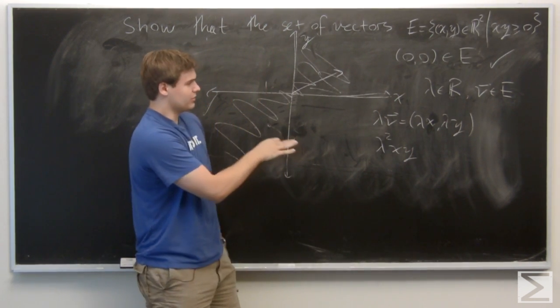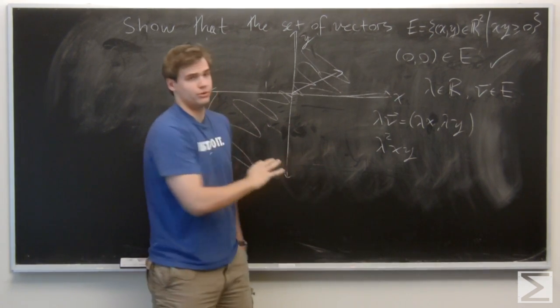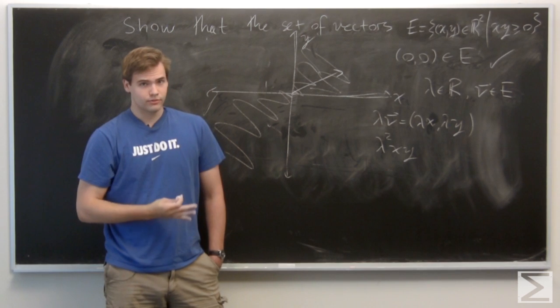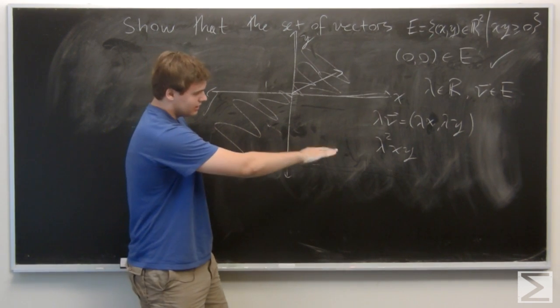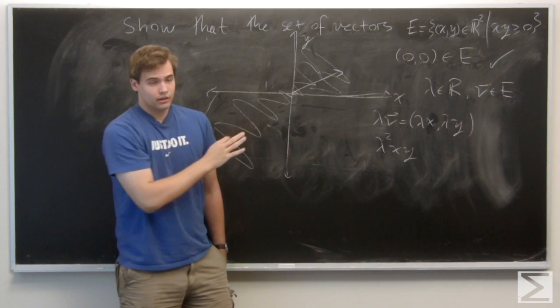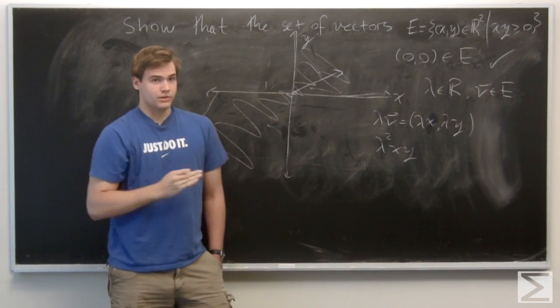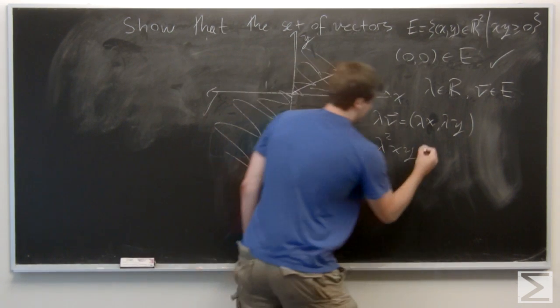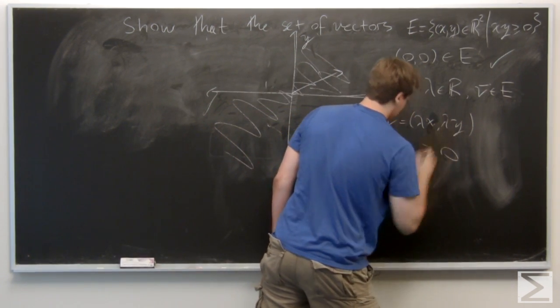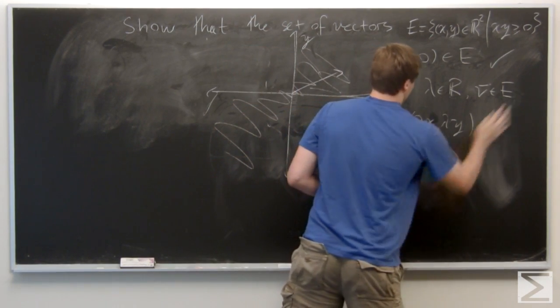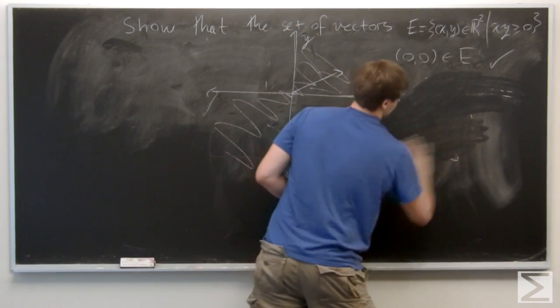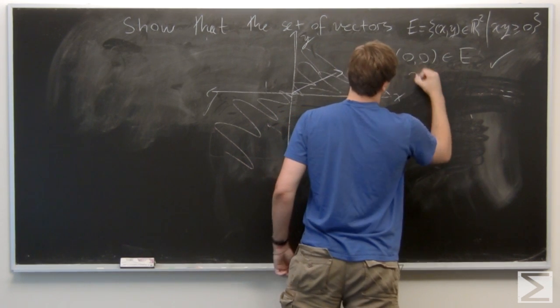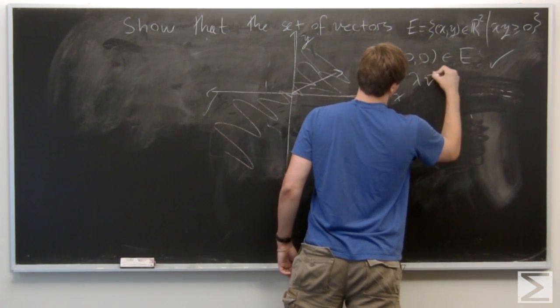Well, if lambda was equal to 0 in the beginning, then this whole expression is equal to 0 and it lies in E. If lambda was positive or negative, then lambda squared is definitely positive. And since V was already in E, the product of the two coordinates is positive. So since a positive times a positive is positive, we have that this is greater than or equal to 0. So in particular, it's closed under scalar multiplication, which we'll abbreviate by writing lambda V is in E.